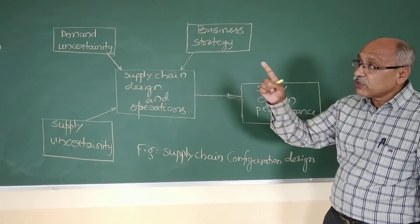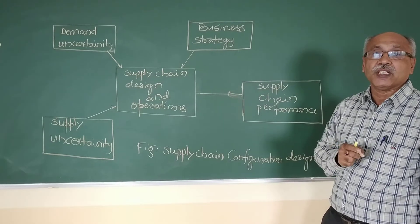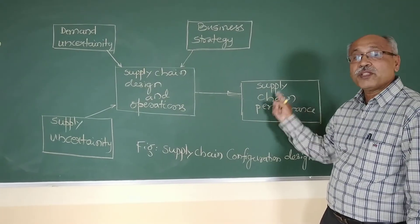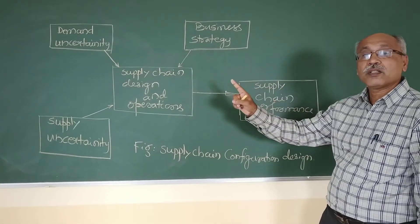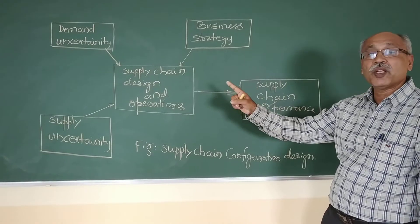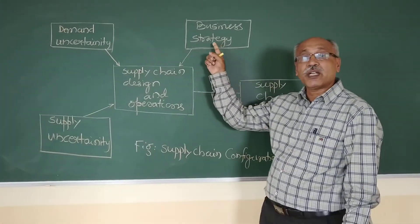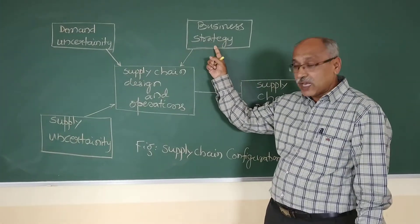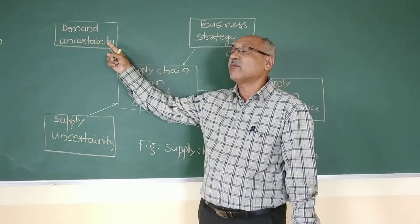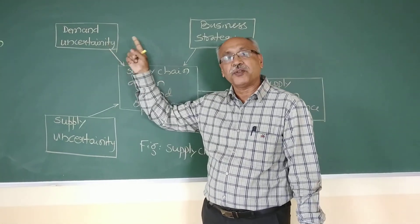That is the term we use here — aligned supply chain — which means the performance of a company with respect to its supply chain, keeping the business strategy in alignment with supply uncertainty and demand uncertainty.